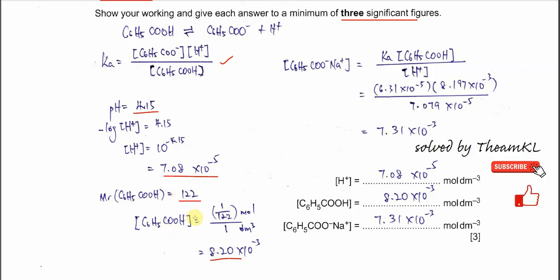Now we already have two concentrations: the concentration of hydrogen ion and the concentration of the acid. The Ka is given, so we can get the concentration of the salt now. Rearrange the Ka expression. Substitute all the values in. So Ka times concentration of acid over concentration of H+, so you get 7.31 times 10^-3.